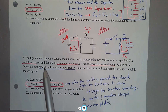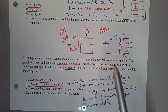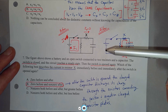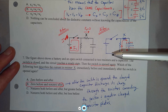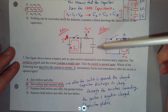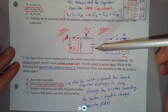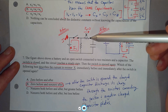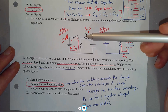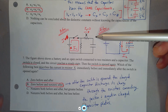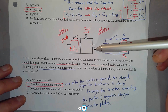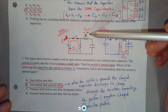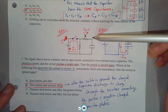Number 7: A battery and open switch are connected to two resistors and a capacitor. The switch is closed and the circuit reaches steady state. When the switch is closed, the capacitor charges until it reaches equilibrium, at which point no more current flows to or from it. Therefore, there's no more current flowing through resistor X. The current through X when the circuit is in steady state is zero.